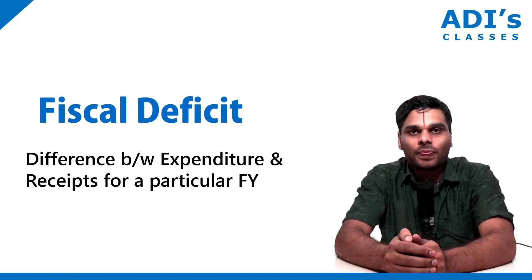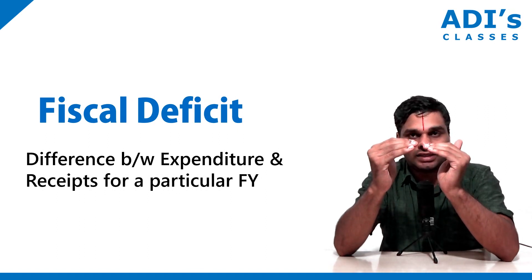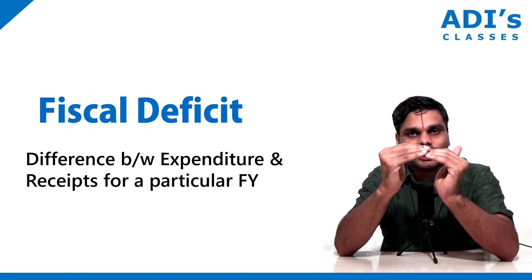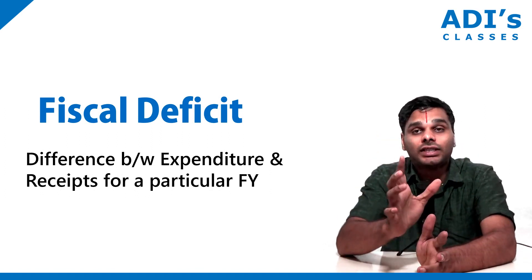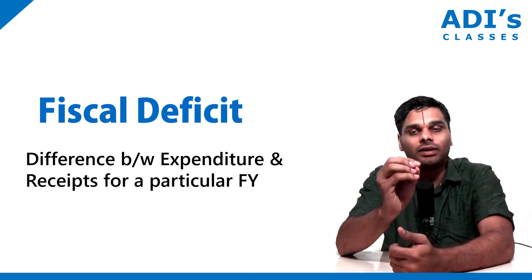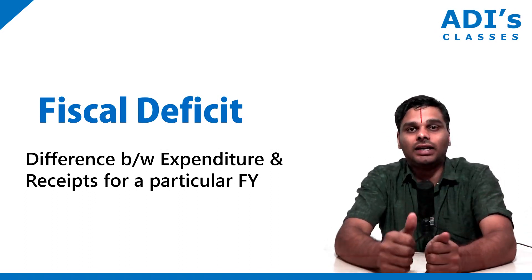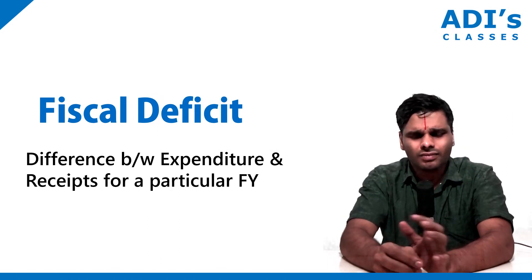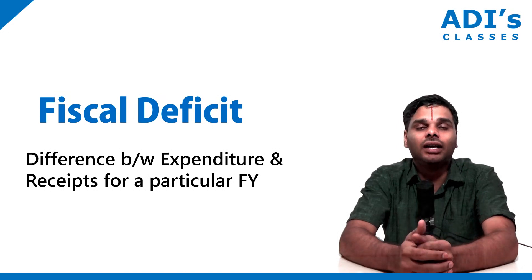We know that deficit means there is a difference between receipts and expenditure — the receipts are lower and the expenditure is higher. We have to cover this deficit. When we look at this deficit for a particular financial year in a budget, it becomes fiscal deficit because fiscal means for that particular financial year. So the difference between the expenditure of the government and its receipts for a particular financial year is known as fiscal deficit.